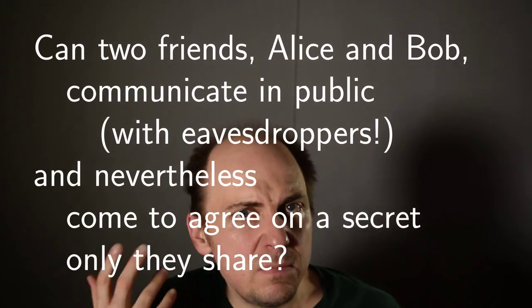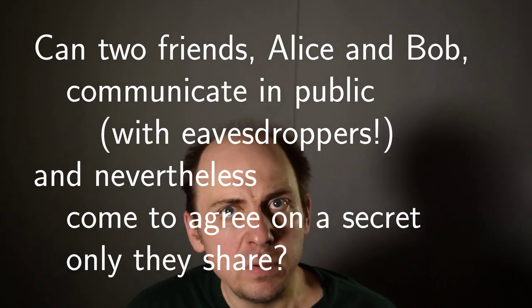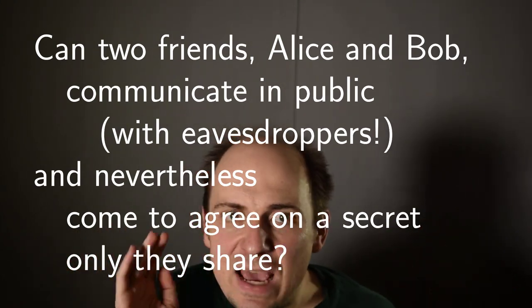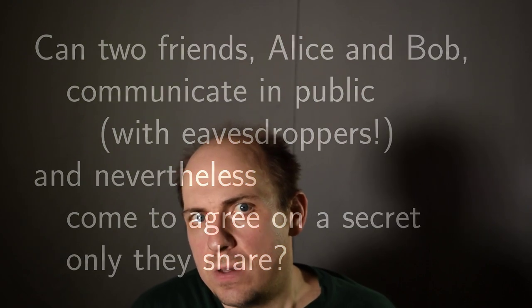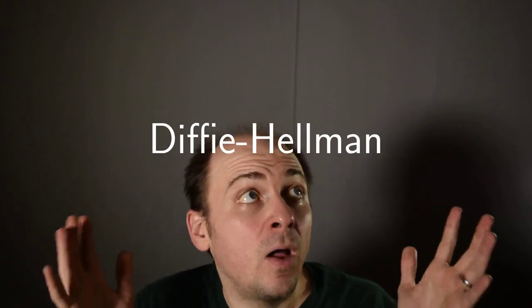Can two friends, Alice and Bob, communicate in public with eavesdroppers and nevertheless come to agree on a secret only they share? We'll see that this is possible through a procedure called Diffie-Hellman.